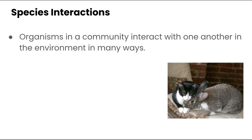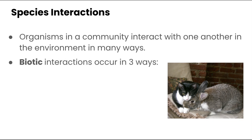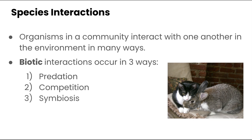Species and organisms in a community are going to interact with one another in the environment in many different ways. Biotic interactions can occur in three ways: by predation, by competition, or by symbiosis. We're going to take a look at each one of these and go over what they are and take a deeper dive.